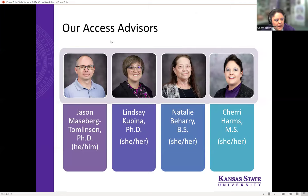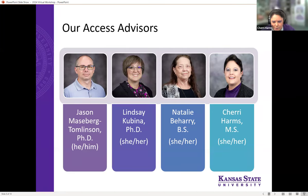So what does that look like at the collegiate level? I'm going to tell you a little bit about how the process works with our office. Most offices at other colleges and universities will have a similar format. In our office, we have six full-time staff members and three graduate students — these are our access advisors. On other campuses, they may be known as disability support specialists, disability support coordinators, or disability advisors.